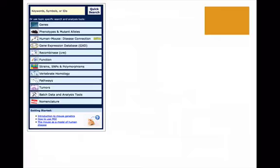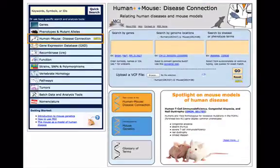To access the HMDC, simply click on the HMDC button from the Mouse Genome Informatics homepage. Along the top of the HMDC home, you can see three boxes allowing you to search by gene, genome location, or disease term.